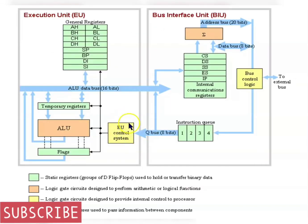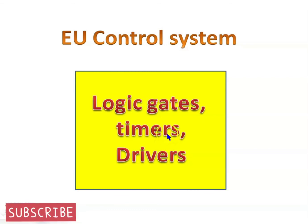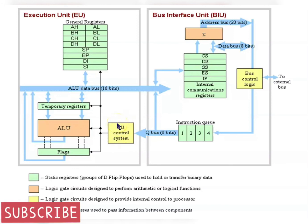The EU control system is designed with a set of gates to control the timing and passing of data to other units within the execution system to achieve a desired result. It is just like a manager of an organization who doesn't know the full details of the operations being performed, but plans what to do, when to do it, and where to do it.